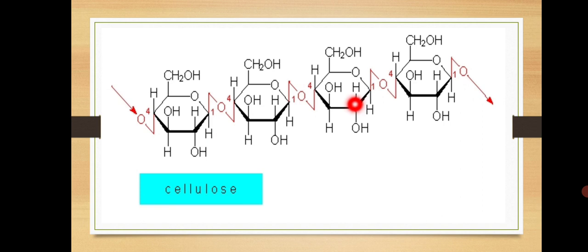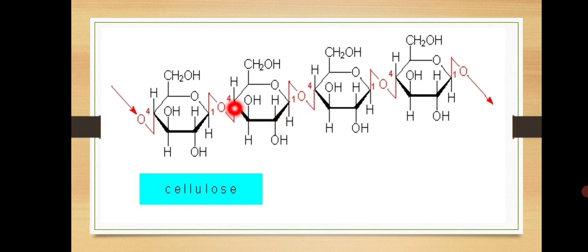These glucose units are joined together by beta-1,4 glycosidic bond. This is the first position and this is the fourth position, so beta-1,4 glycosidic bond. Why beta? Why not alpha? Because of the way glucose units are joined to each other — you can see the arrangement is like a flip.